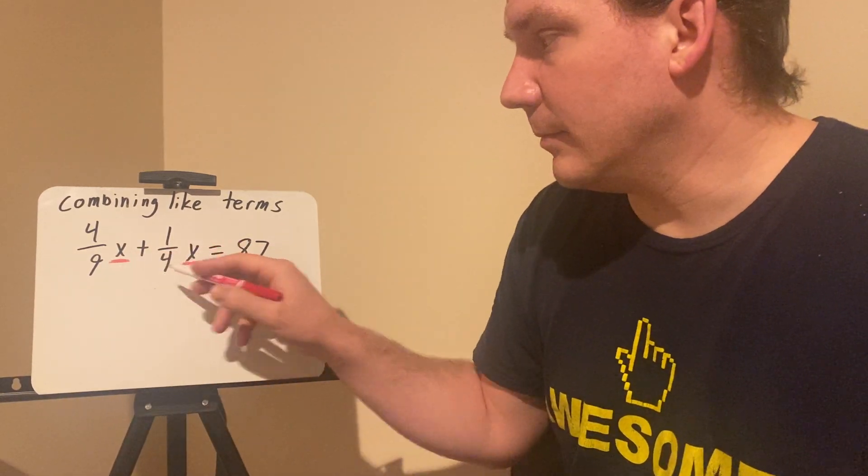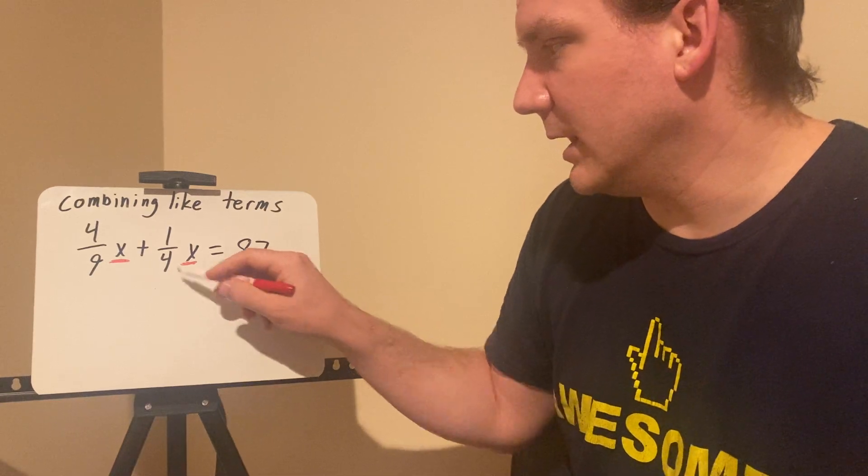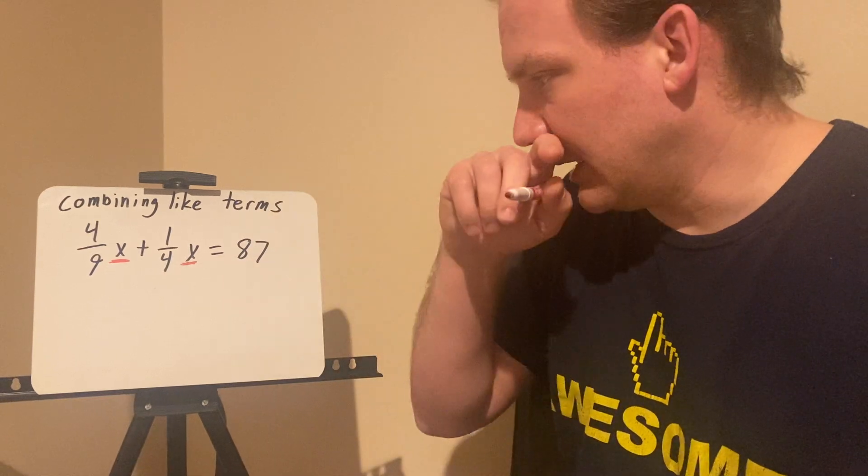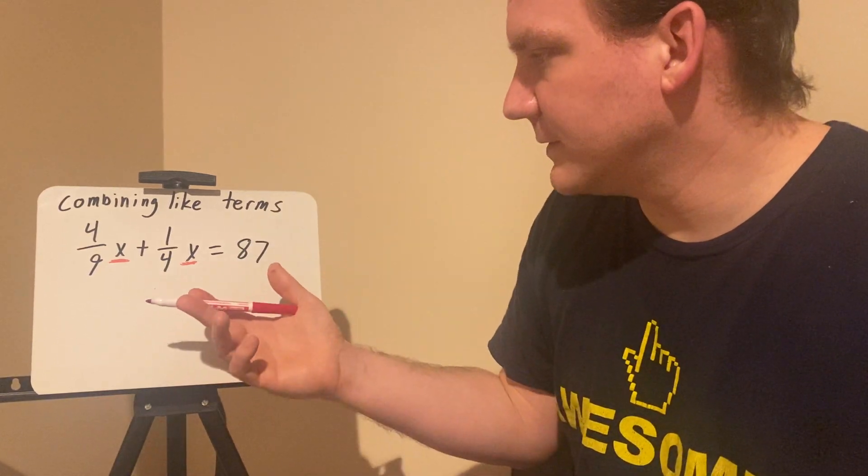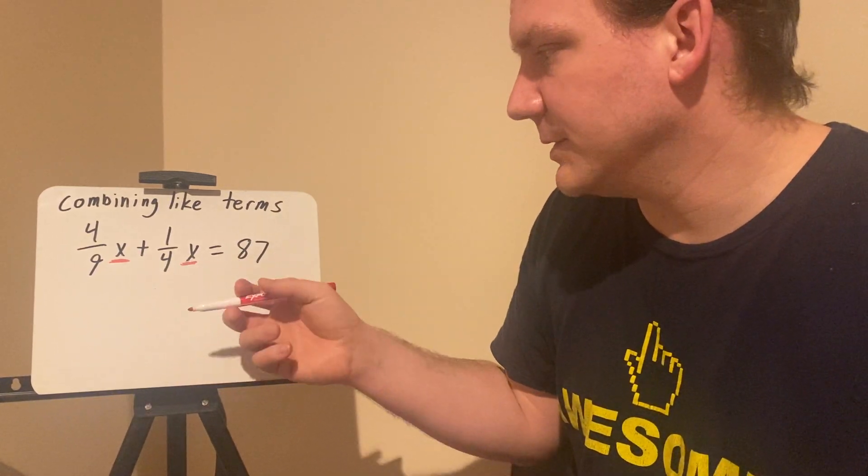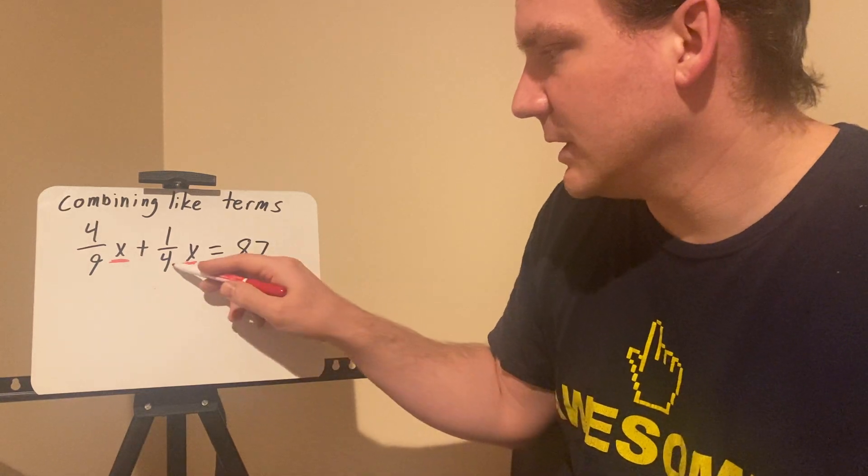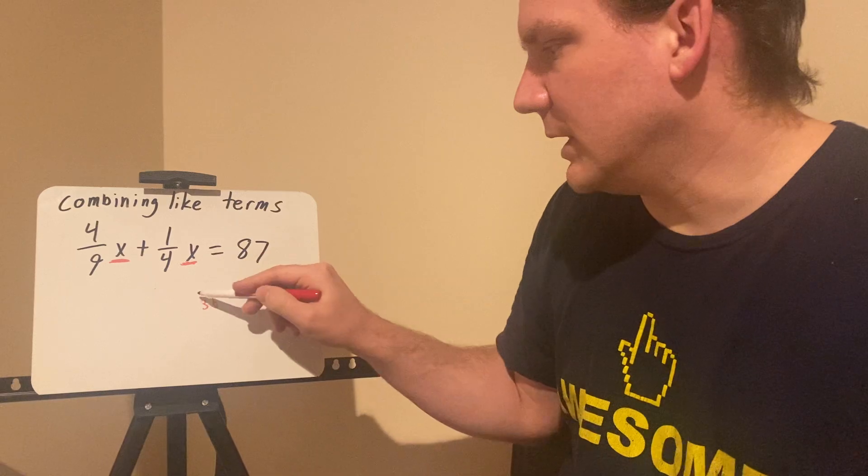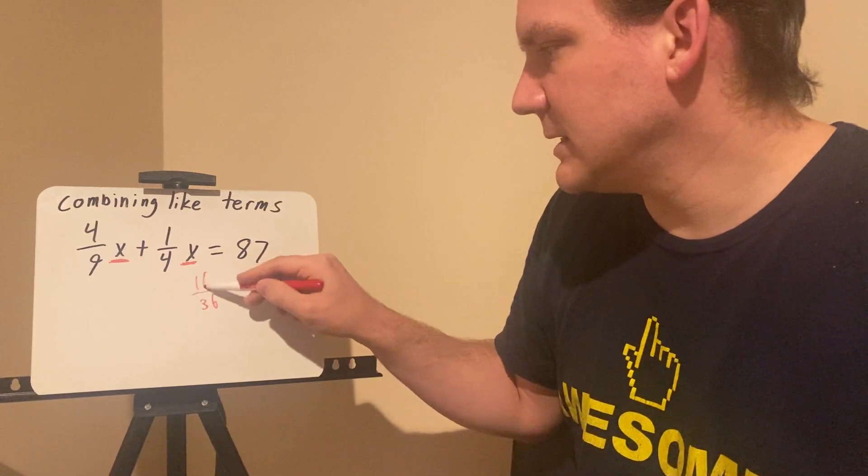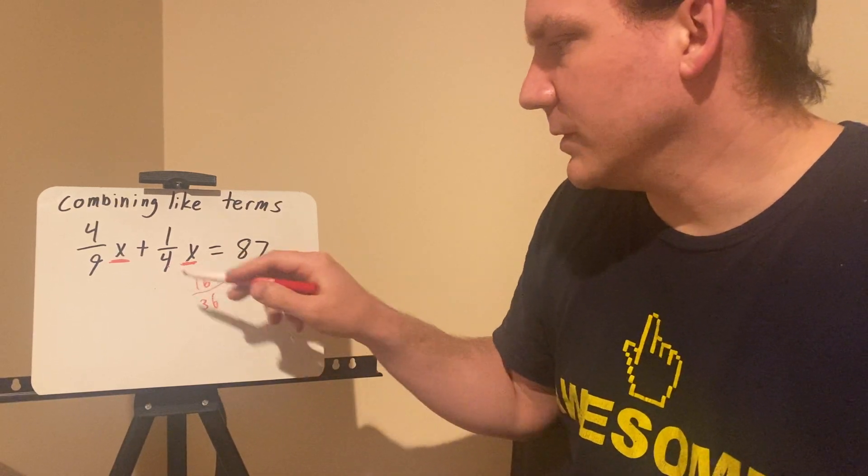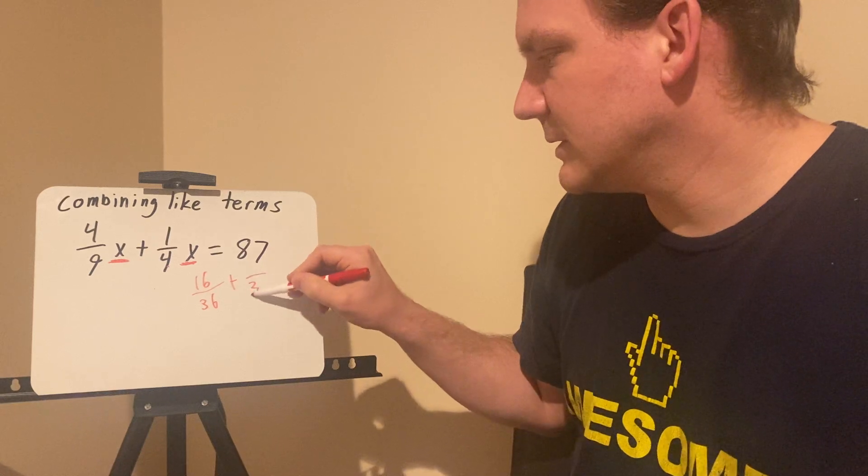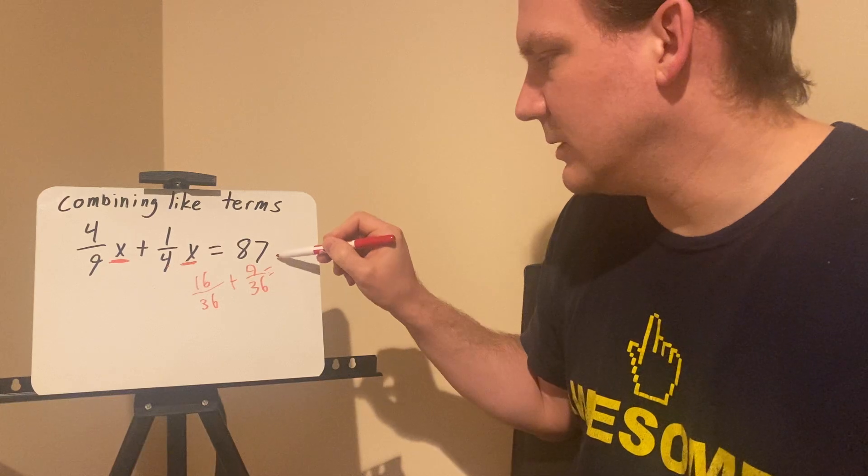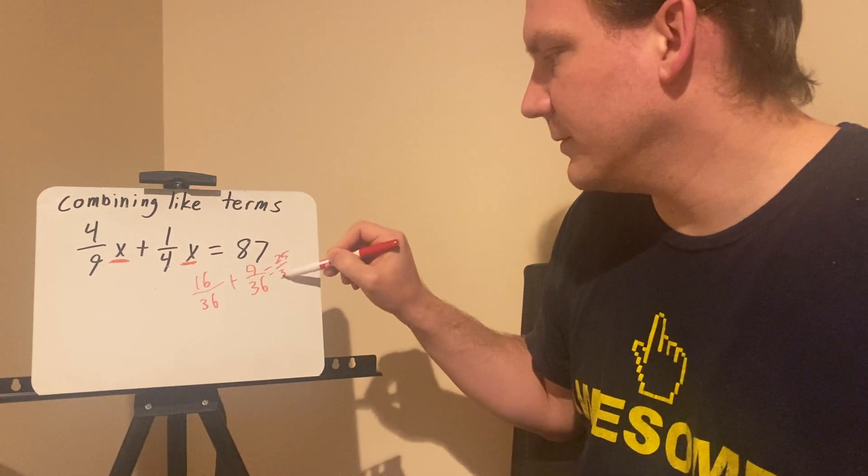So I can combine them by adding, not because it's addition. I can do 4/9 plus 1/4. In order to do that, I need a common denominator. In this case, my common denominator, I would go ahead and go to 36. Nine times four is 36. Four times four is 16. Four times nine is 36. And one times nine is nine. 16 plus nine equals 25 over 36.